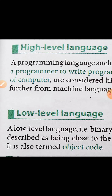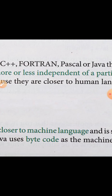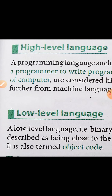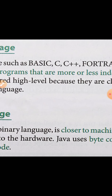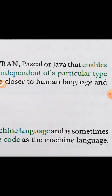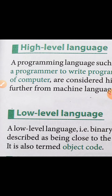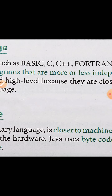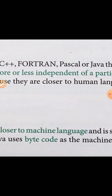Next heading: Low Level Language. A low level language — example: binary language — is closer to machine language and is sometimes described as being close to the hardware. Java uses bytecode as the machine language. It is also termed object code.